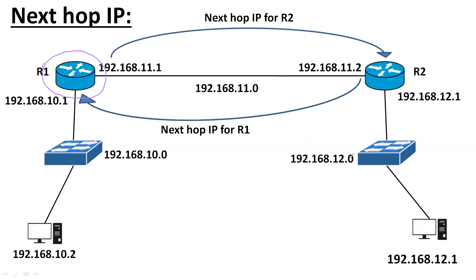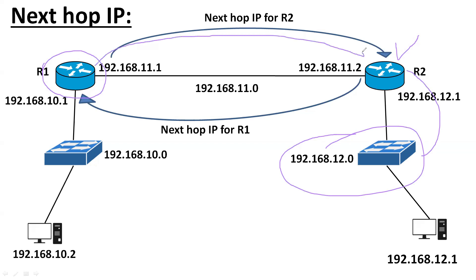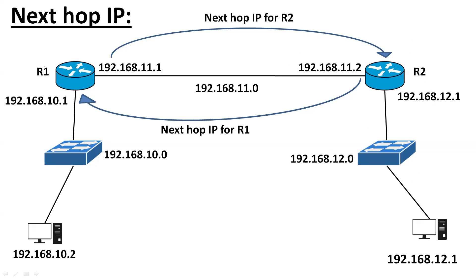What is the next-hop IP address? Let's assume this is my router and this is the indirectly connected network 192.168.12.0. The other router is connected to that indirectly connected network. The IP address that connects the two routers — for example, 192.168.11.2 assigned to the neighbor router's interface — is called the next-hop IP address. In simple terms, it is the IP address assigned to the neighbor router's interface.